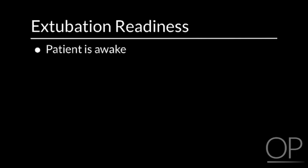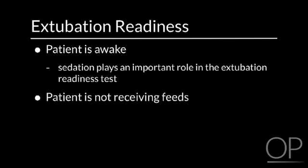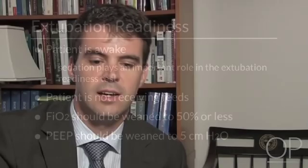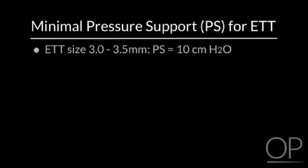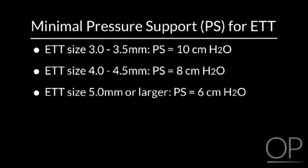When is a patient ready for extubation? Once the patient has improved, we must assure that the patient is awake — sedation plays an important role in an extubation readiness test. We would stop feeds to ensure an empty stomach. FiO2 should be weaned to 50% or less, and PEEP should be weaned to 5. Here at Children's, we use a pressure support linked to the size of the endotracheal tube, since a smaller tube requires more pressure to overcome its resistance. A 3.0 or 3.5 tube uses pressure support of 10 (so 10 over 5); a 4.0 or 4.5 tube uses pressure support of 8; and a 5.0 or larger tube uses pressure support of 6. If the patient tolerates these settings, is awake, not tachypneic, and has a normal blood gas, the patient is considered ready for extubation.